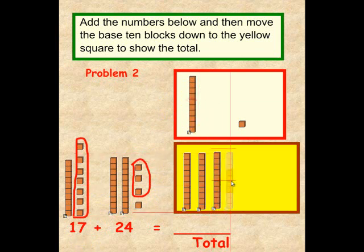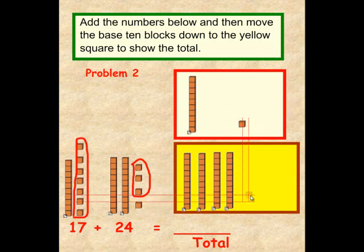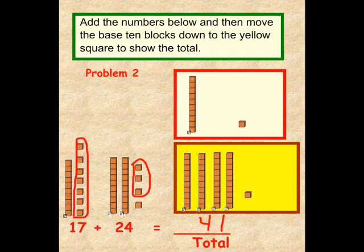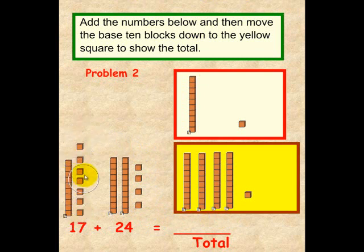And that gives us four tens or 40 — one, two, three, four, or ten, twenty, thirty, forty. And we have one left over. So, 17 plus 24 is equal to 41. And let me draw 41 here. Hopefully your answer matched ours. If it did, that's great. If you would, please have another student come up to the smart board. And while they're coming up, please pick up an eraser and erase your answers. Thank you.